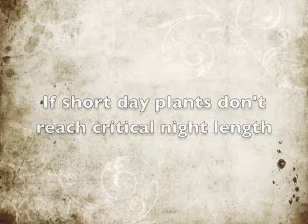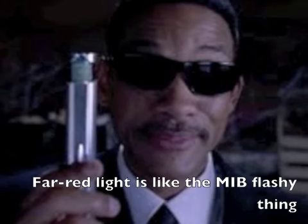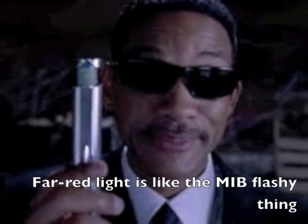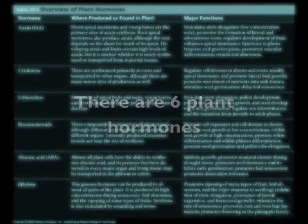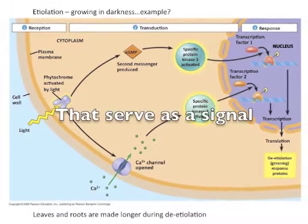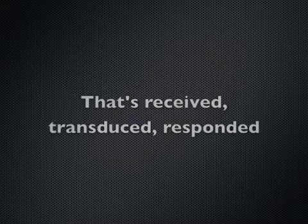There are six plant hormones. Far red light is like MIB — flash and the plant forgets. A signal is received, transduced, and responded to.